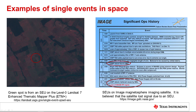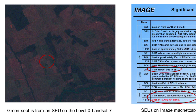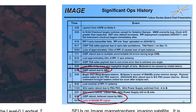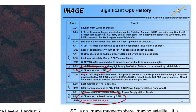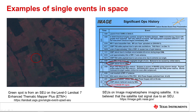Here are two examples of single events in space. The photo on the left is a thermal image of Earth, where inside the red circle a green dot was caused by a single event upset. On the right is the log of major events on an imaging satellite, showing that the computer had to be reset due to a single event upset, and eventually the satellite lost communication due to a single event upset.